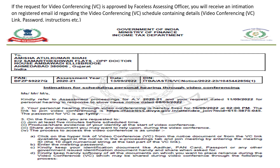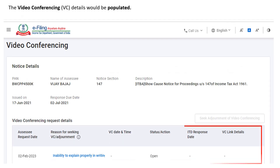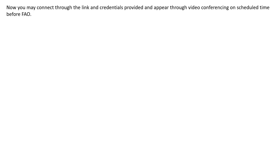Your request for video conferencing will be sent to the faceless assessing officer. If the request is approved, you will receive an intimation on your registered email ID regarding the video conferencing schedule. This intimation will contain the video conferencing link, password, and instructions. Alternatively, you can also login to the e-filing portal, go to the e-Proceedings tab, and click on 'Seek Video Conferencing' against the relevant notice to view the populated video conferencing details.